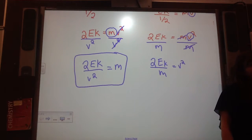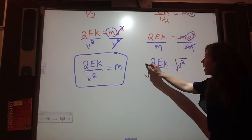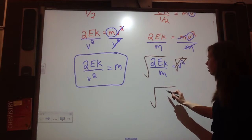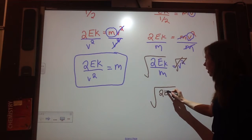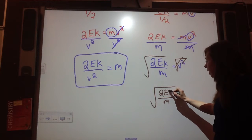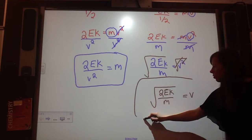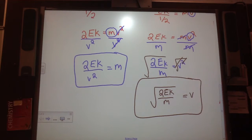But I'm not done, because there's still a squared attached to my v. So what's the opposite of being squared? Square rooting. So I square root both sides. The square root and the square now cancel. And I'm left with the square root of 2Ek divided by m, everything is in the square, is equal to v. Can you find that formula on your formula sheet? Yes. That's where it came from.